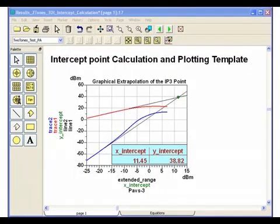Now, here's a template that calculates and plots the third-order intercept point from the data I just showed. Notice the third-order intercept point, TOI, using the circuit level PA is 38.82 dBm.